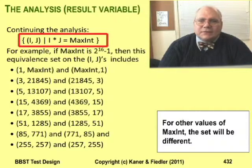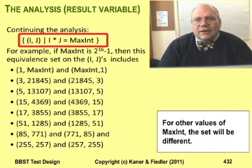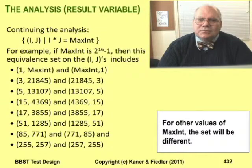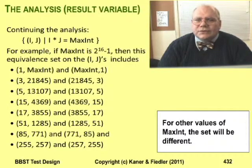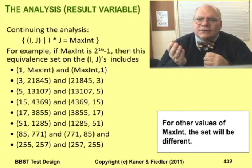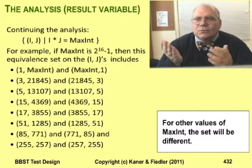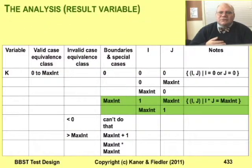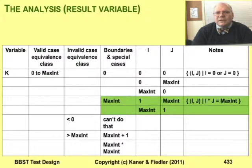The equivalence set for k equals maxint is certainly a lot smaller. It has (1,maxint) and (maxint,1) and some other values. What are those values? Well, that depends on the value of maxint — probably 2 to the 16th minus 1, 2 to the 32nd minus 1, or 2 to the 64th minus 1. Choosing 2 to the 16th minus 1 arbitrarily, there are 14 other pairs that yield i times j equals maxint. My first instinct is to test with (1,maxint) and (maxint,1), but at some point I'll start using some of the other numbers instead.